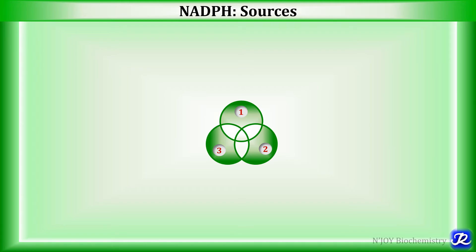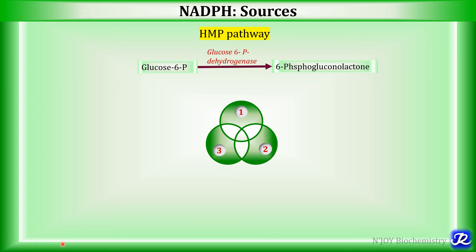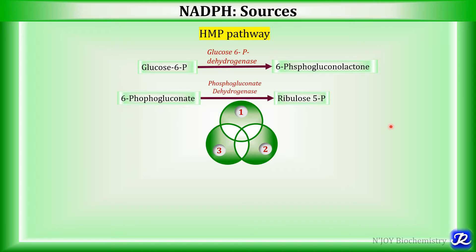NADPH is mainly derived from three important sources, and the first and most important is the HMP pathway — hexose monophosphate pathway, also called the pentose phosphate pathway. NADPH is formed in two reactions here. The first is conversion of glucose-6-phosphate to 6-phosphogluconolactone by glucose-6-phosphate dehydrogenase. The second is conversion of 6-phosphogluconate to ribulose-5-phosphate by phosphogluconate dehydrogenase. The important function of HMP pathway is to produce NADPH along with ribose-5-phosphate.